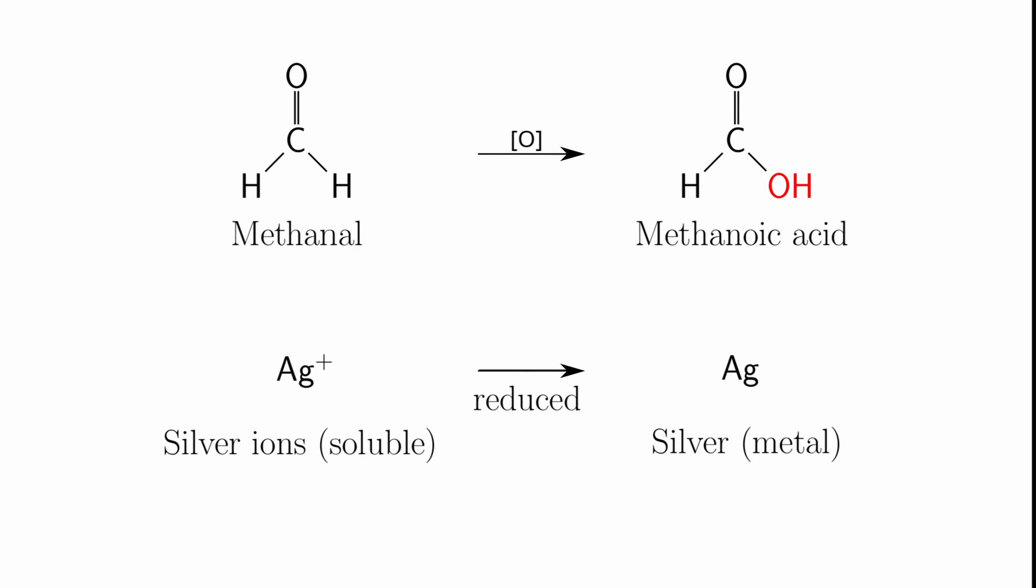The silver metal is obviously insoluble in water and it will usually come out as what we call a silver mirror. If we're lucky, you can get a nice coating of silver on the inside of the glass tube, and because of the reflective nature it makes a beautiful mirror.